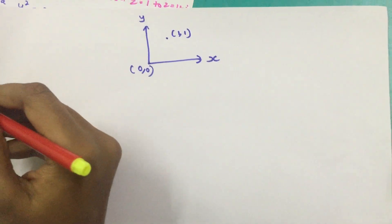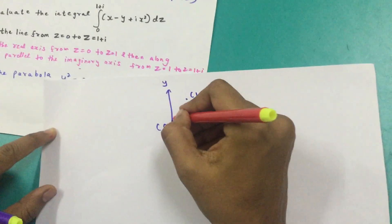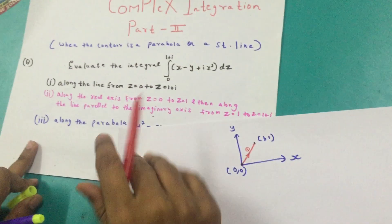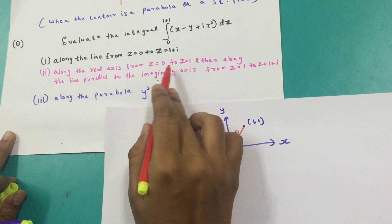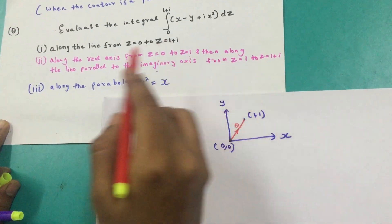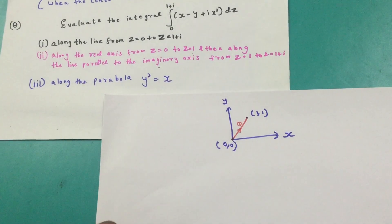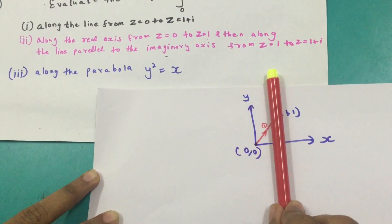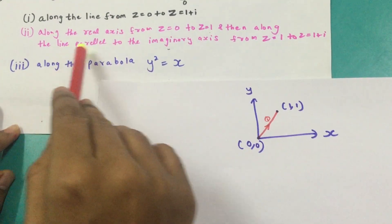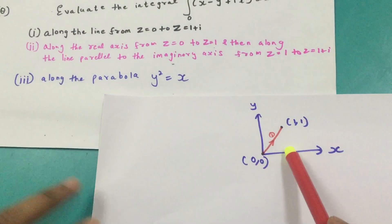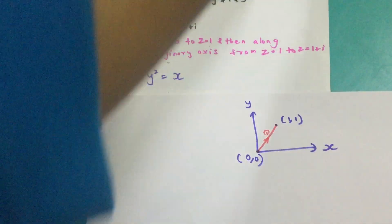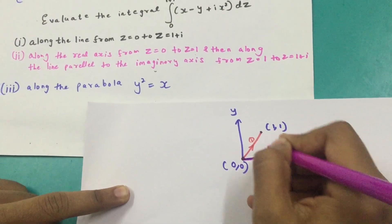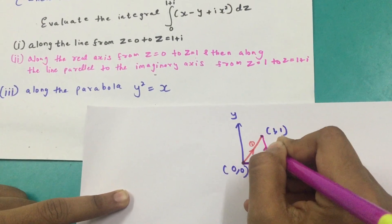So the first line is along the line from z = 0 to z = 1+i — this is line 1. Line 2 is along the real axis from z = 0 to z = 1, and then along the line parallel to the imaginary axis from z = 1 to z = 1+i. So that gives us path 2.